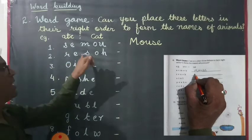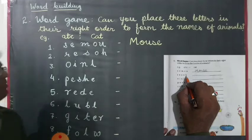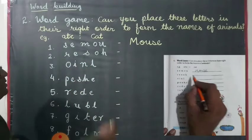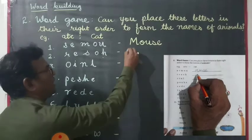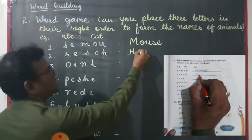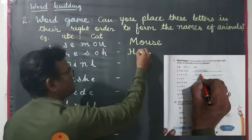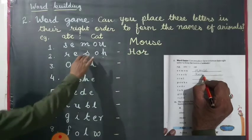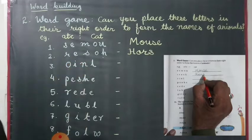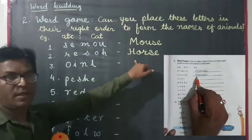Now second: R, E, S, O, H — find out the name of the animal when we rearrange the letters in their right order. Yes, my dear. We put H, O, R, S, E. The word is horse. The right name of the animal is horse.